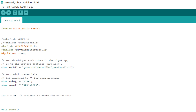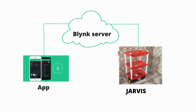Now, upload the code — link in the description. Now, we made an app to control our personal robot using Blynk. If you want to make an app like this, watch the video in the description. And in the future, we will put tutorials on Blynk.